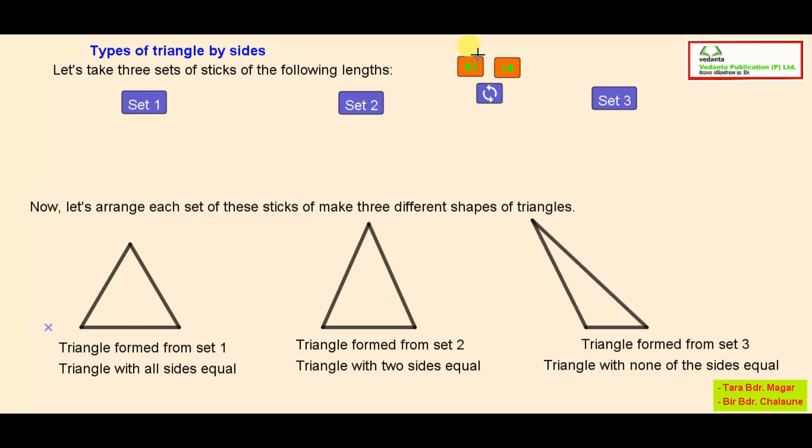Triangle formed from set three, triangle with none of the sides equal. This is called equilateral triangle, isosceles triangle and scalene triangle.